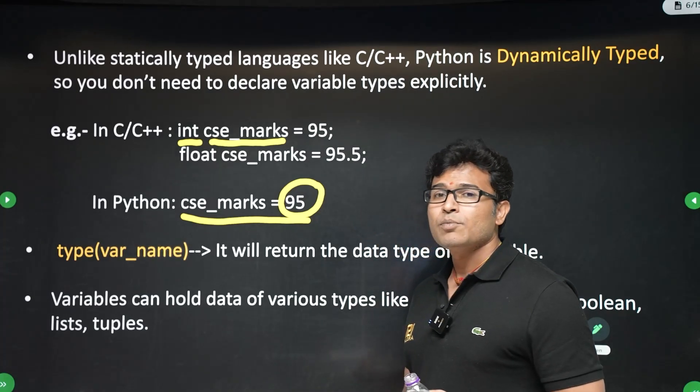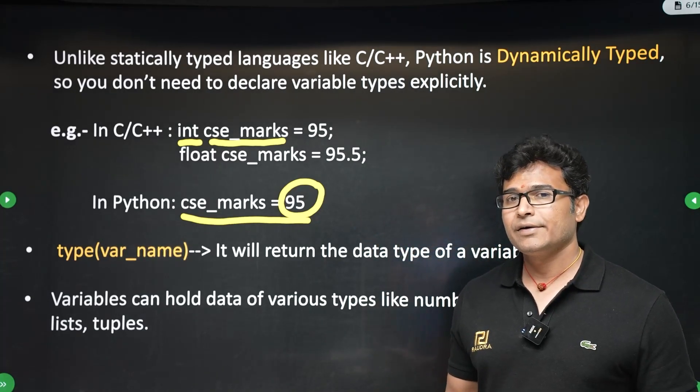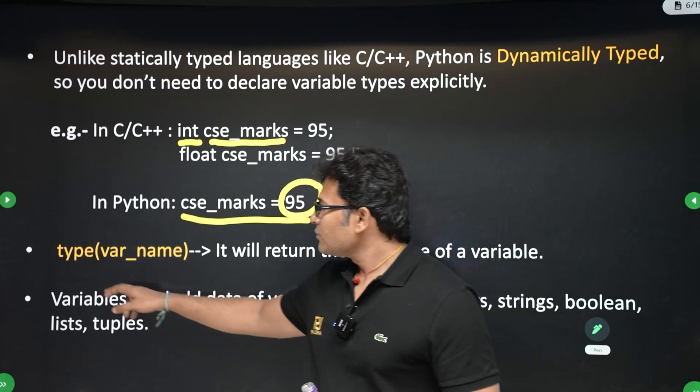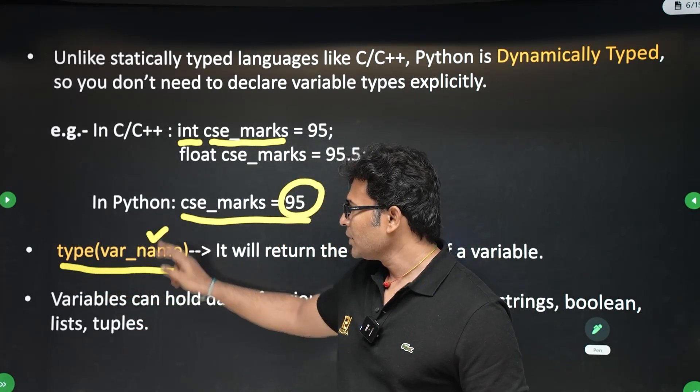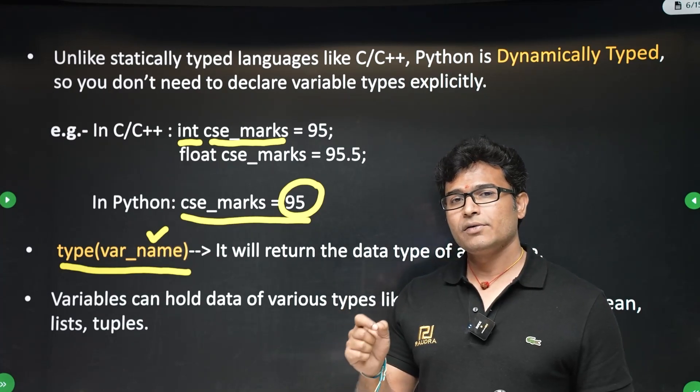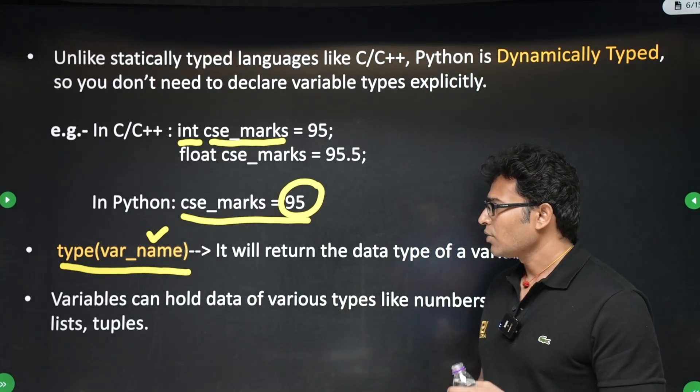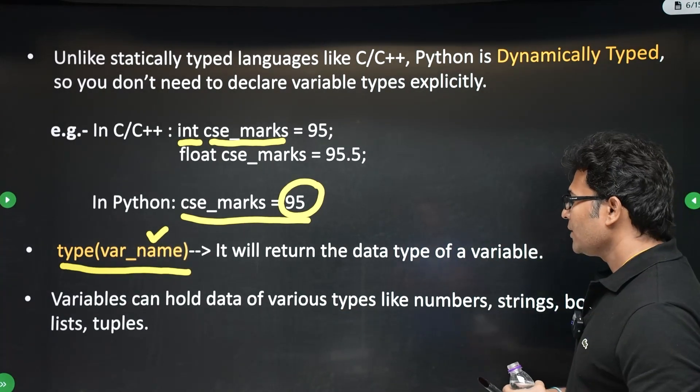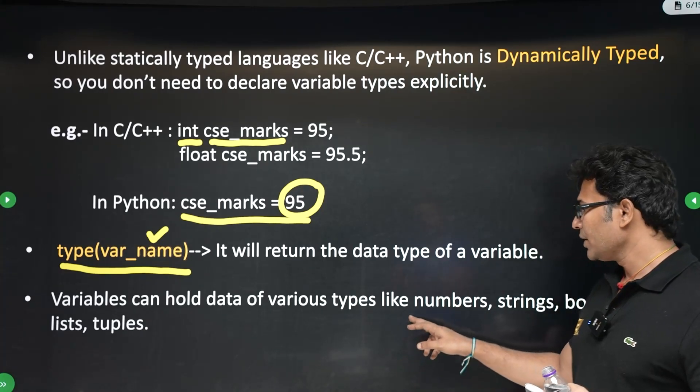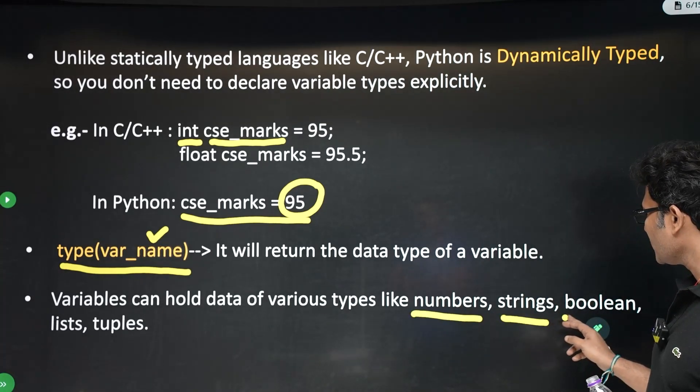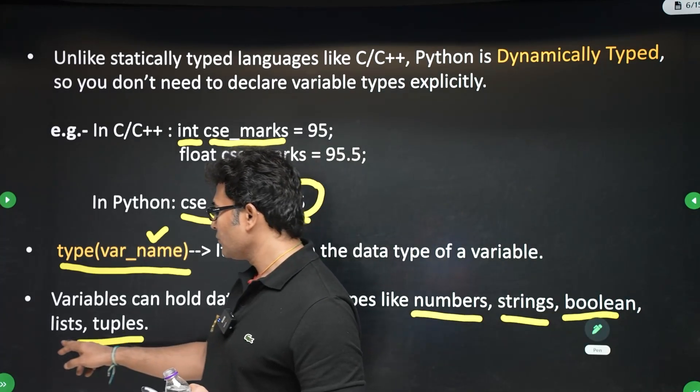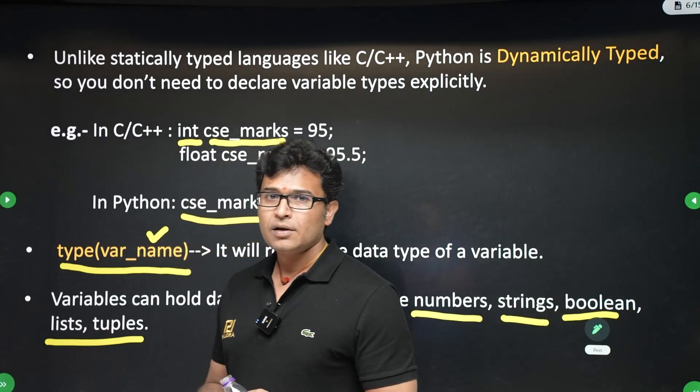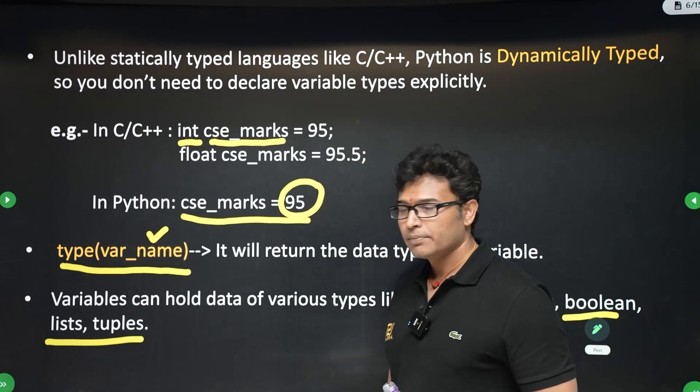Now, how do you know the type of a variable without declaring it? There is a function called type. If you call type with the variable name, it will give you what that variable is. Variables can be of different types. They can be numbers, strings, Boolean variables, lists, tuples. We will look at lists and tuples later. They are very, very helpful in Python.